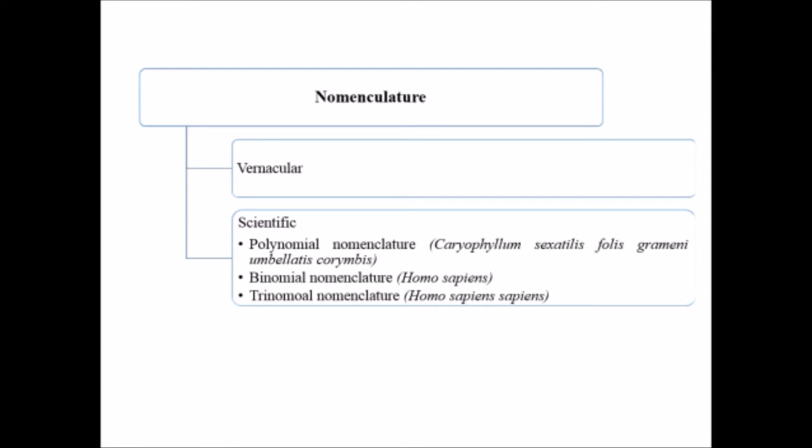Scientific names are universal. Let's deal with them one by one. Polynomial nomenclature - here I have taken the example of Caryophyllum saxatilis foliis gramineis umbellatis corymbis.